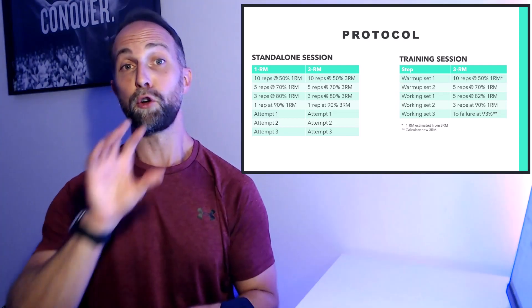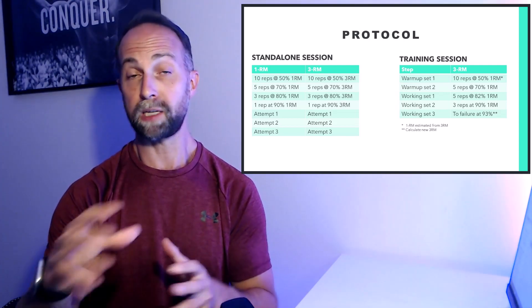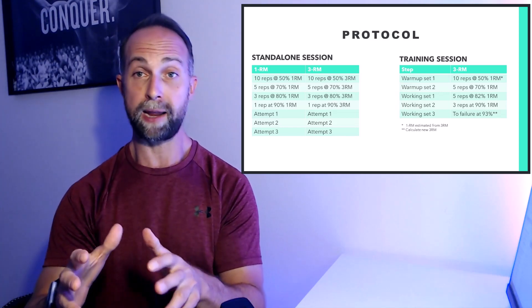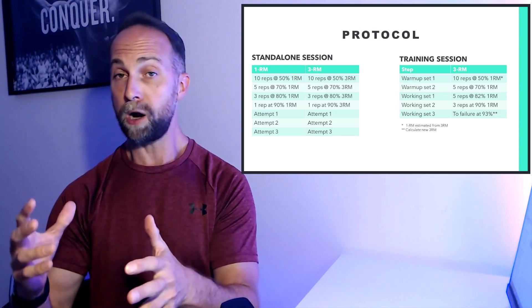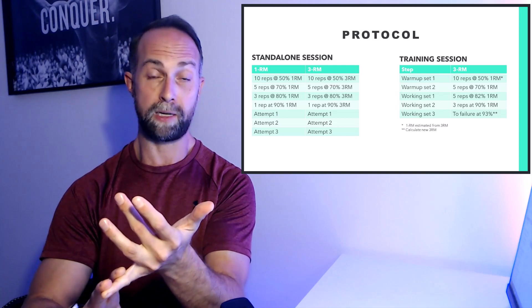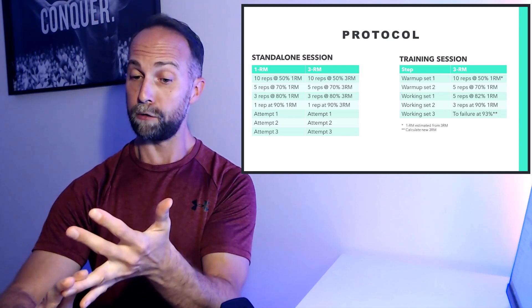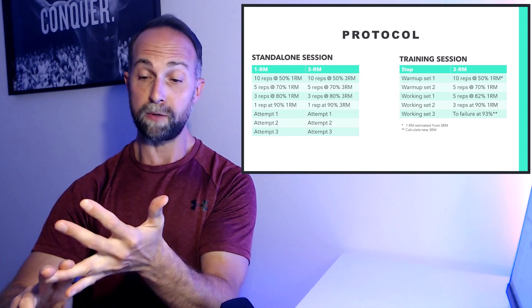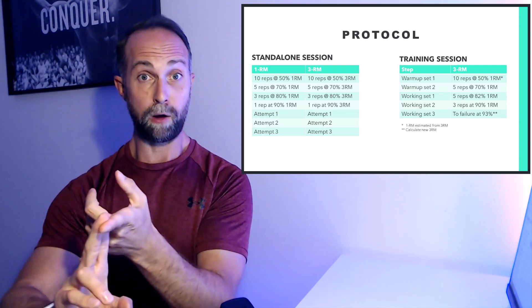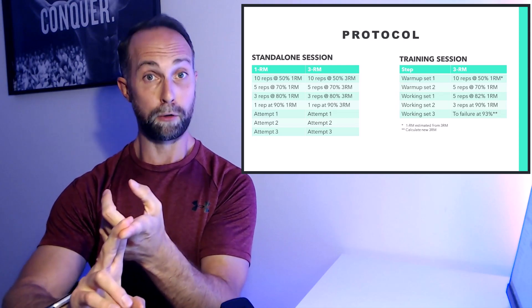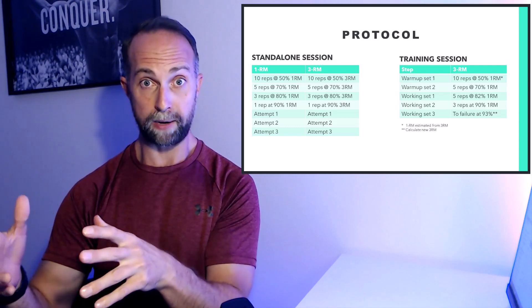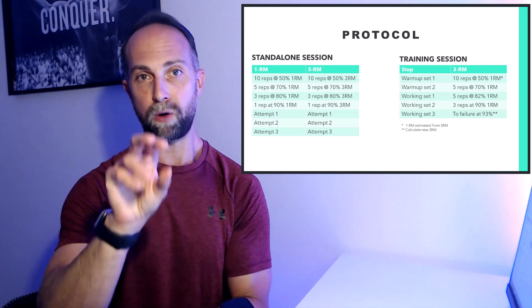Then you're going to move into your specific warmup for the actual test—a warmup with the lift that you're about to test. You're going to progress in this general fashion: start with 50% load on the bar, do around 10 reps; progress to 70% load, do around five reps; 80% load, do around three reps; 90% load, do one to two reps. In between each of those, you'll have around a two to three minute break. That's been your specific warmup for the test.